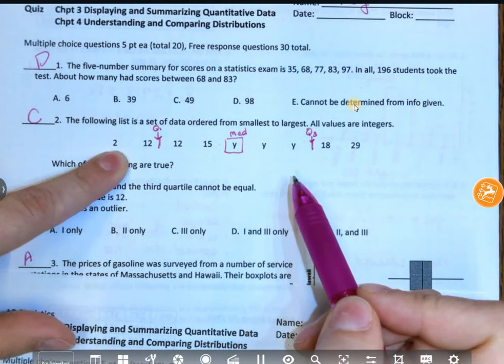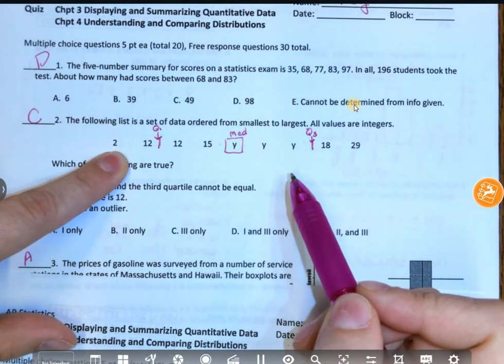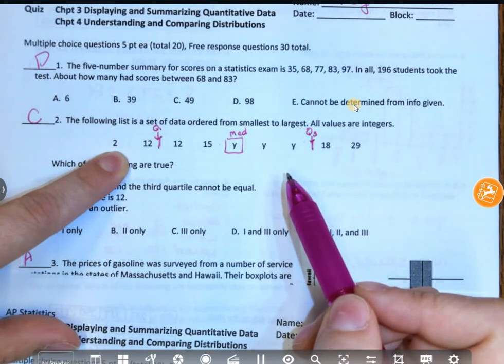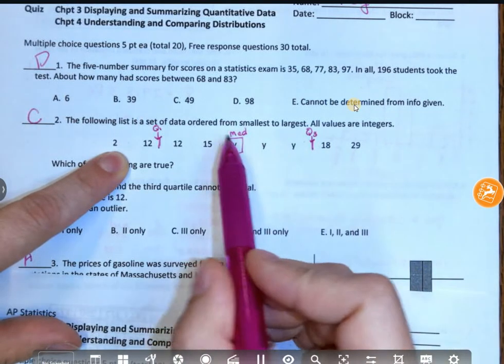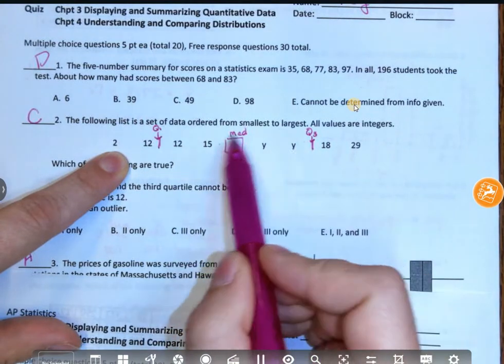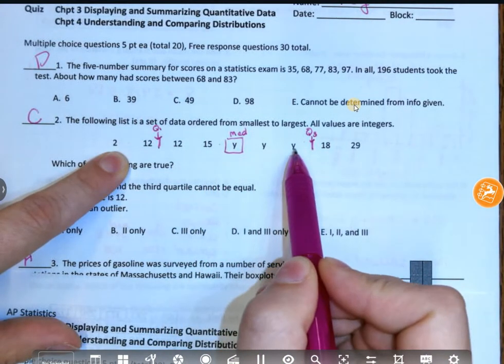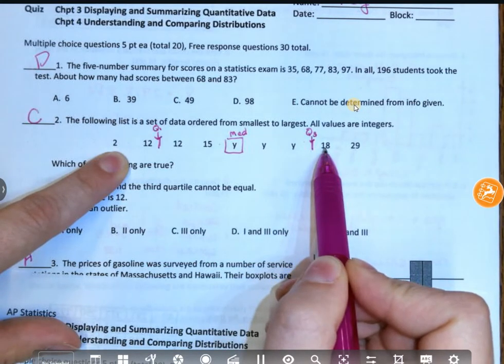These are actual past AP questions. It's not just, can you memorize for me the definitions? You have to understand what that means. And these are ordered from smallest to largest. That just means that this cannot be smaller than 15. This cannot be bigger than 18. That's all that means. Does that make sense?